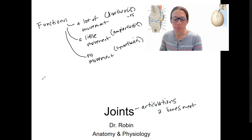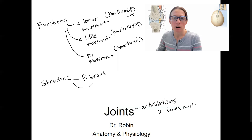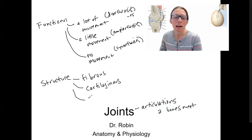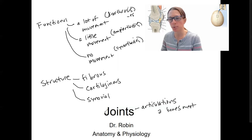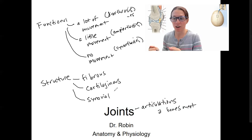We can also categorize joints by their actual structure, which often relates to function. Structural types include fibrous joints — that's dense, regular connective tissue made out of fibers. You can have cartilaginous joints, made from either hyaline or fibrocartilage. And then you can have synovial joints, which are more complex structures such as the knee, elbow, hip, and fingers. These are highly mobile — they're always diarthroses — and they're synovial because they have a synovial membrane capsule.